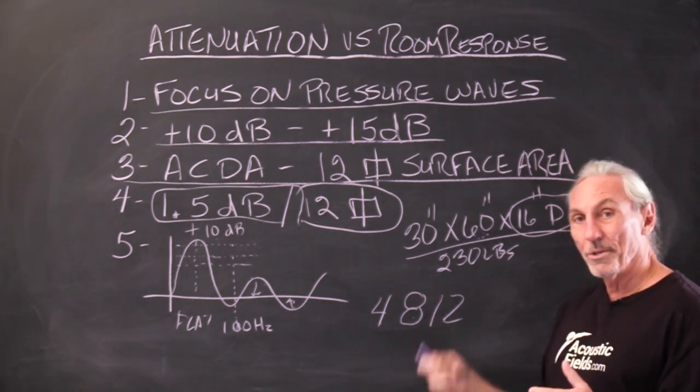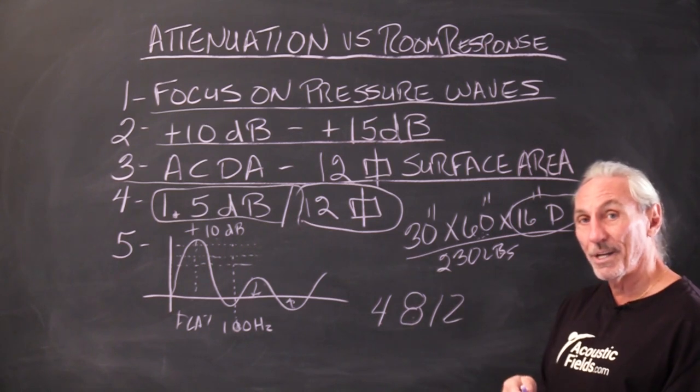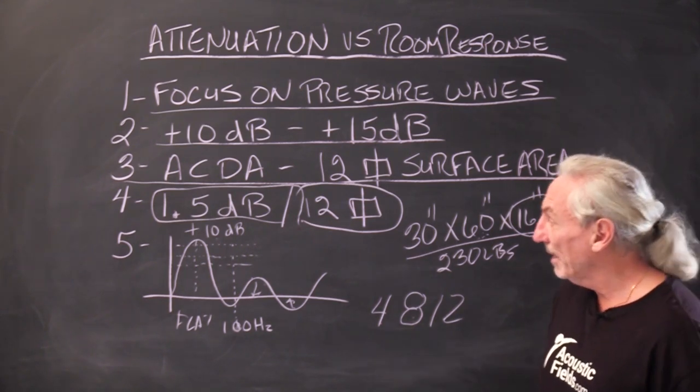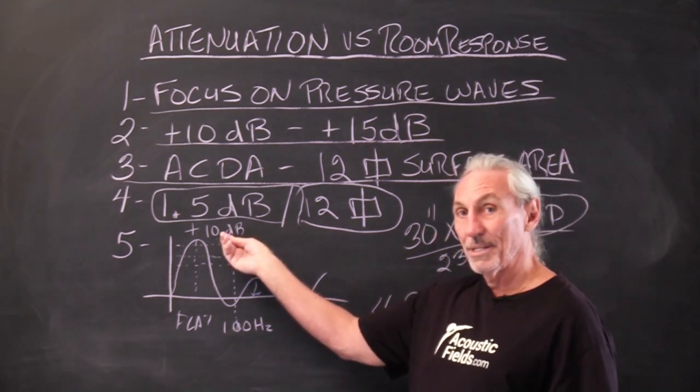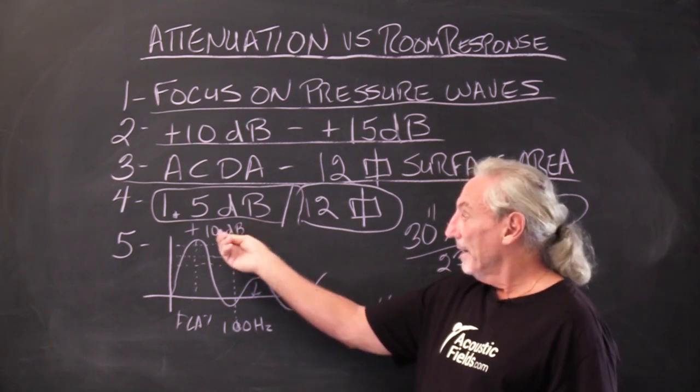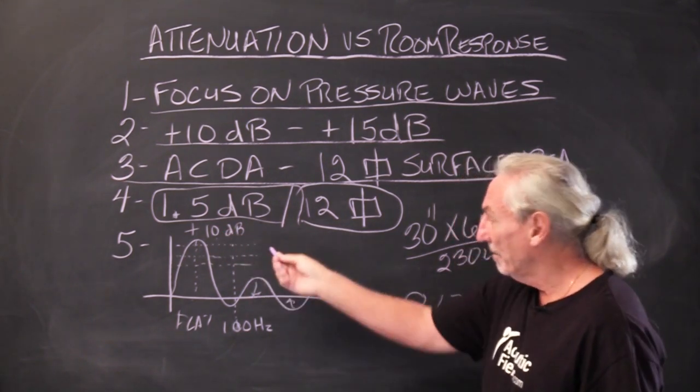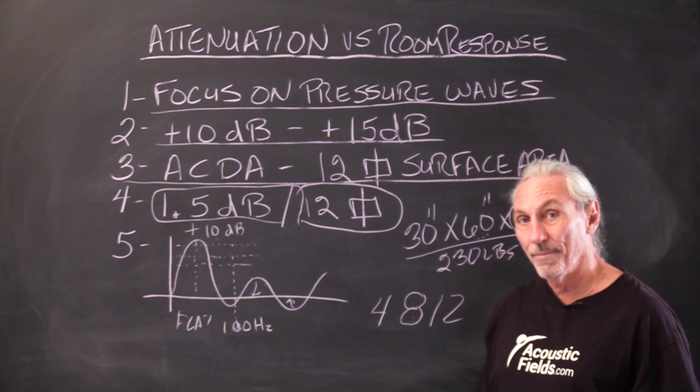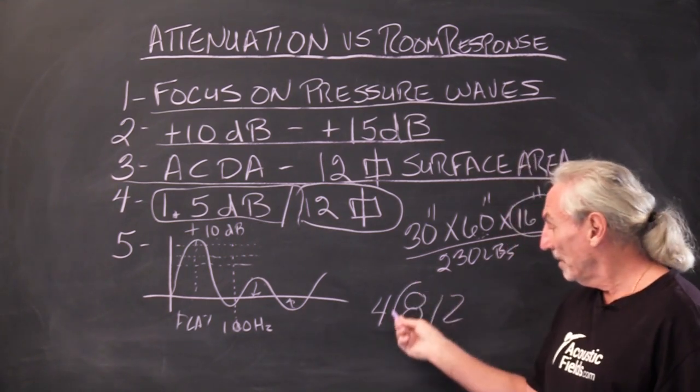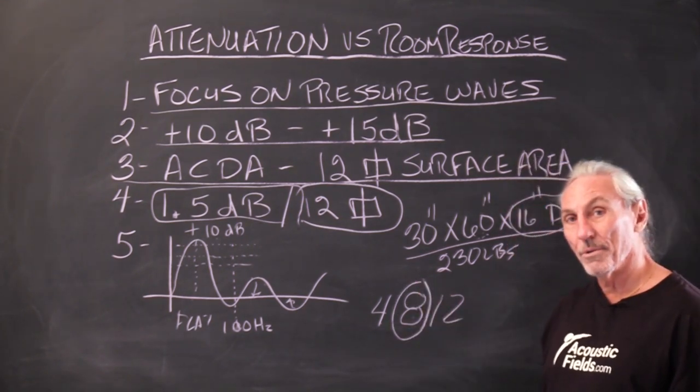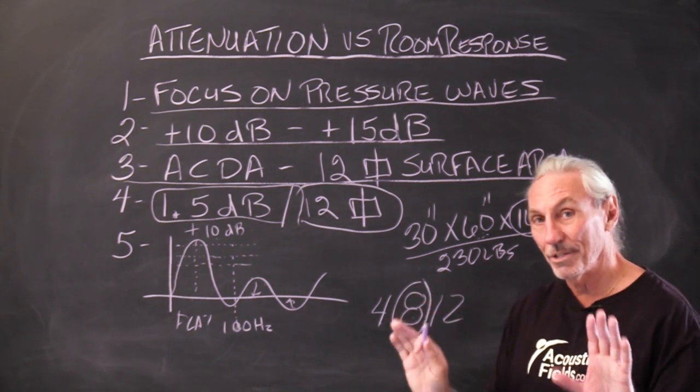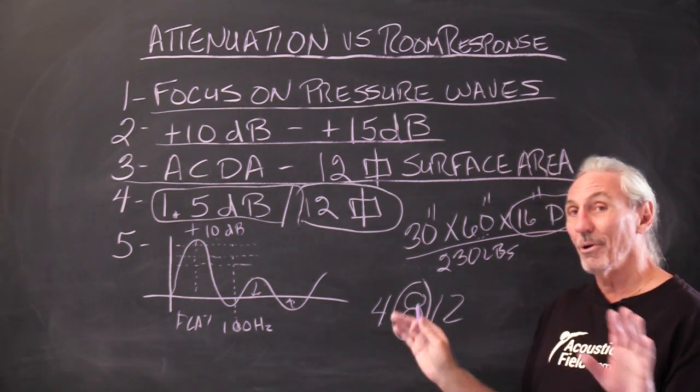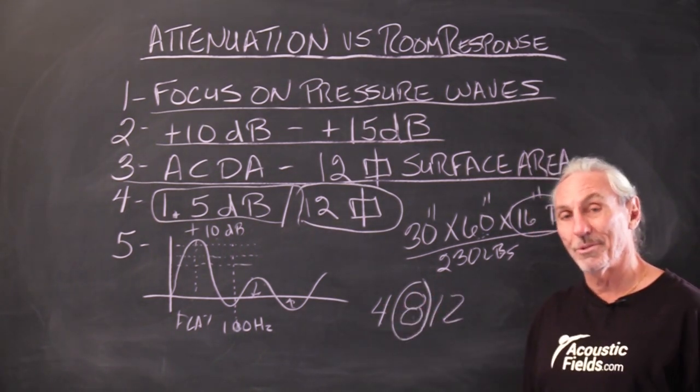So that's how we do our calculation. So when you call me and you say, alright, here's my room size. I look in our database and I know you're going to have maybe a 10 dB peak. I can say, alright, 10 dB divided by 1.5. That's going to be the number of units that we're going to need for your problem on that surface area. It's not for the whole room. It's for that particular surface area.